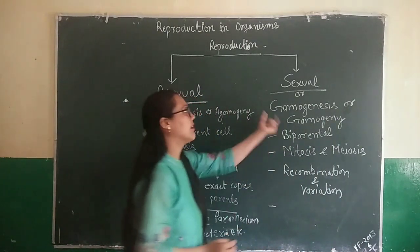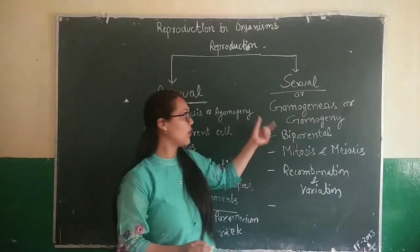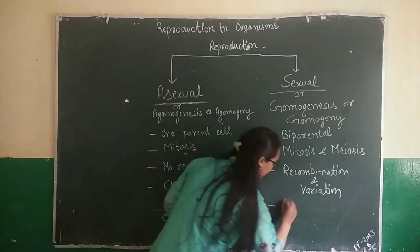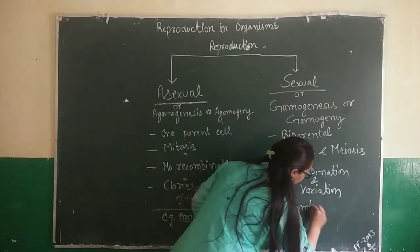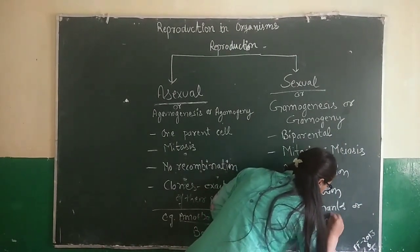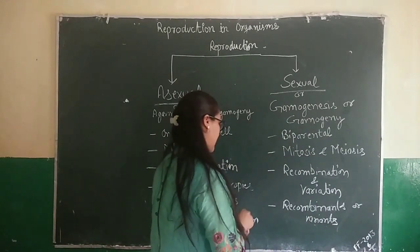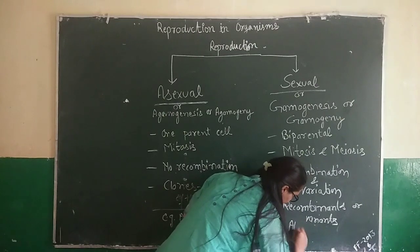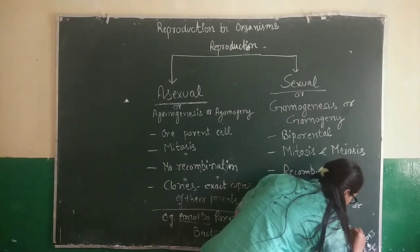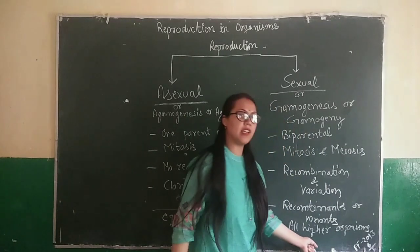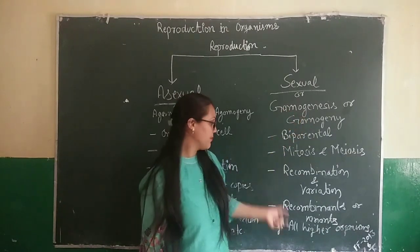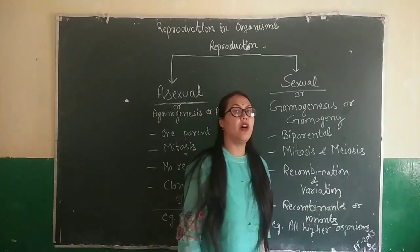Here the individuals — the progeny — are not exact copies of their parents; they are variable due to recombination. Sexual reproduction is always biparental. It occurs in higher organisms, though it does not mean that sexual reproduction does not happen in smaller or lower organisms — that is just given as an example.